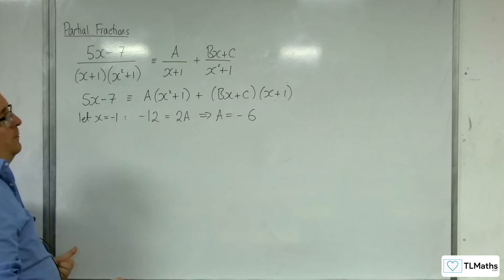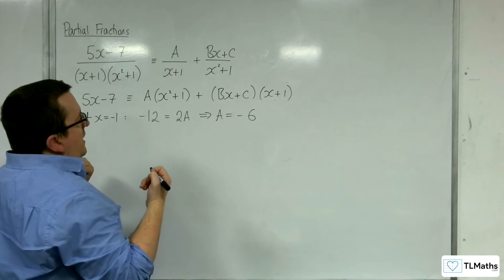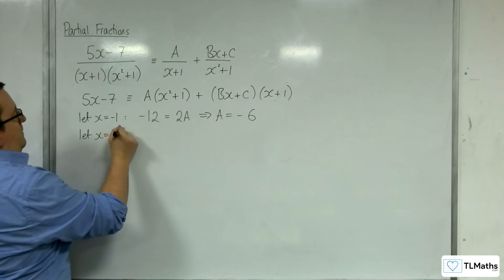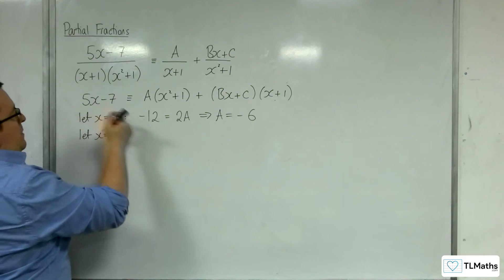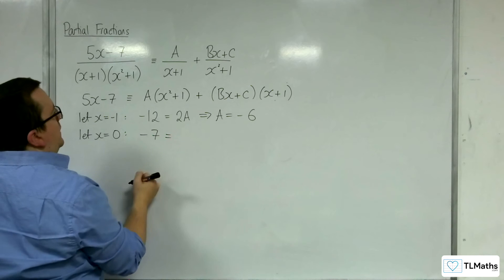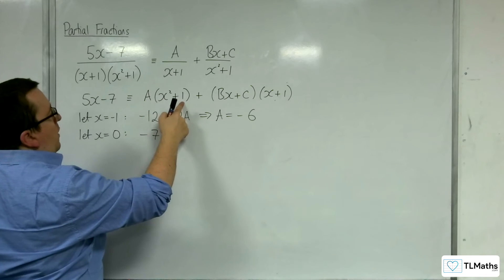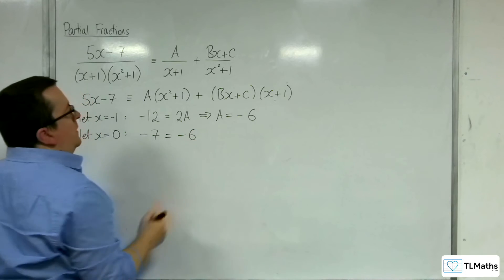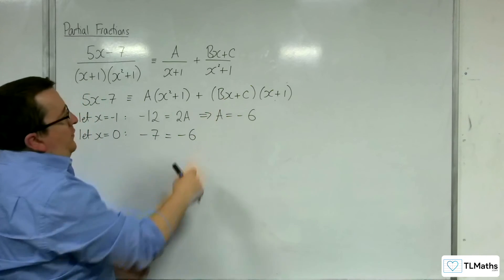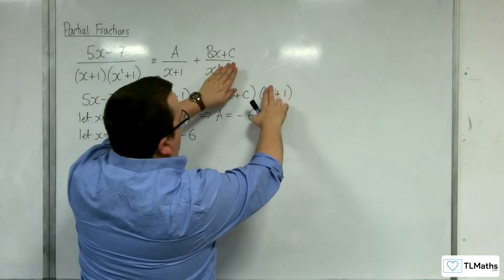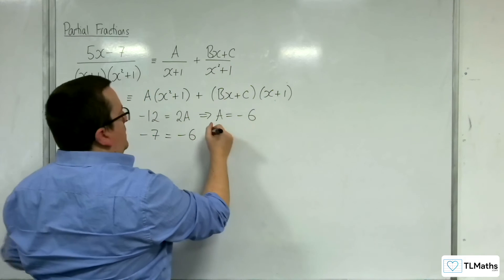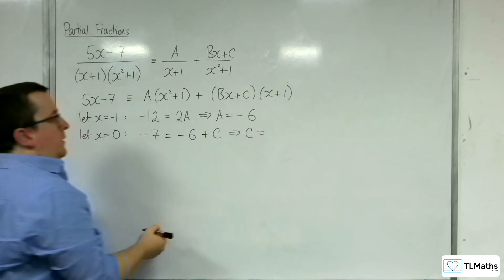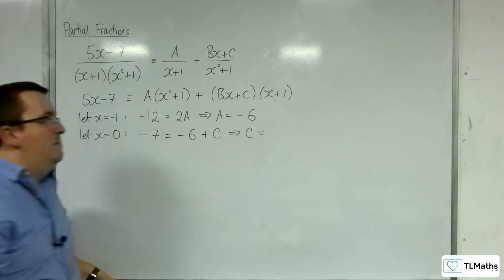Right, next up, if we let x be 0, let's see what happens then. We're going to get minus 7 on the left-hand side. We've got 0 plus 1 times A, so 1 lot of A is minus 6. And then we've got x being 0 and x being 0, so we get C times 1, so plus C. So that means that C has got to be minus 1.